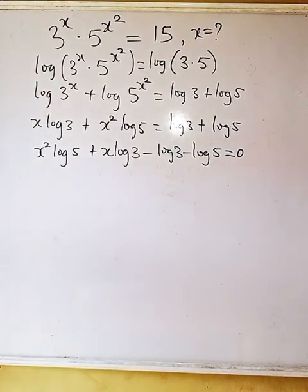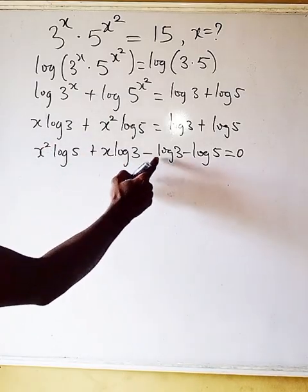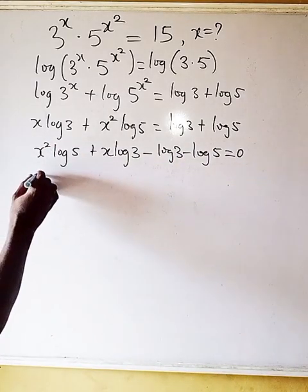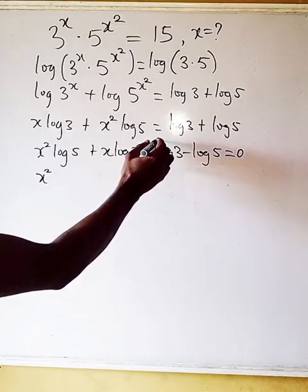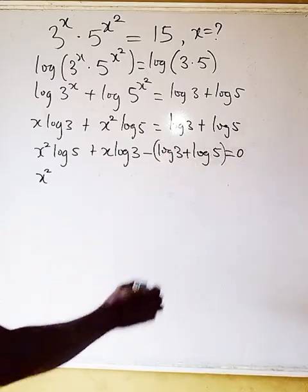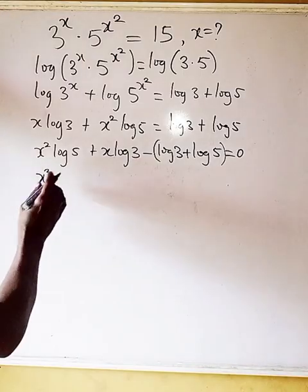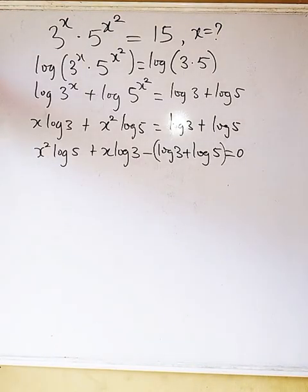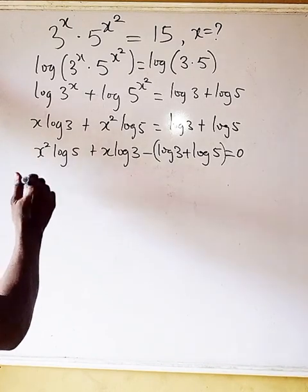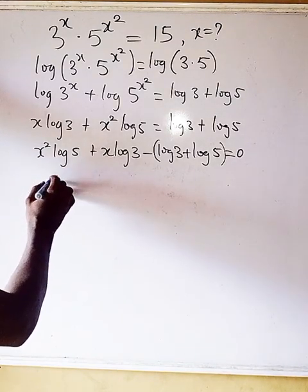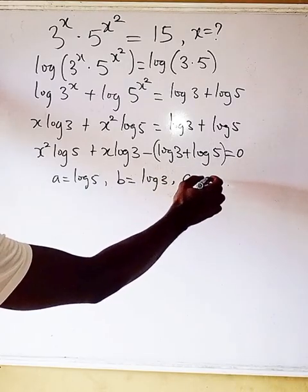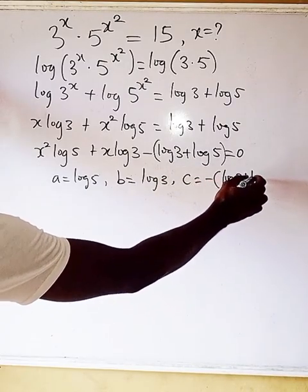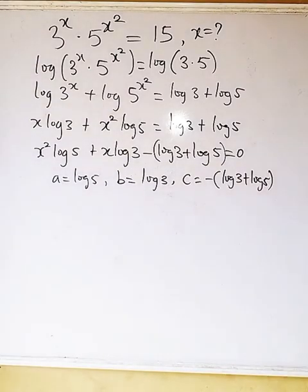Looking at this critically, we have x², we have x, and constant terms — so this is a quadratic equation in x. The coefficient a equals log 5, b equals log 3, and c equals minus(log 3 + log 5).